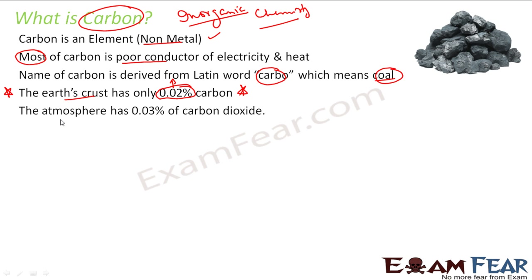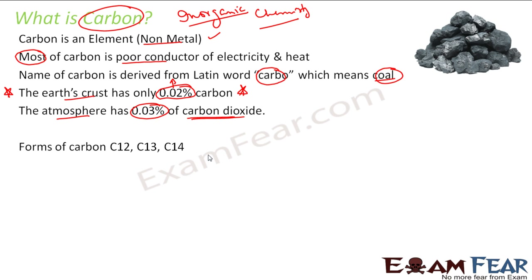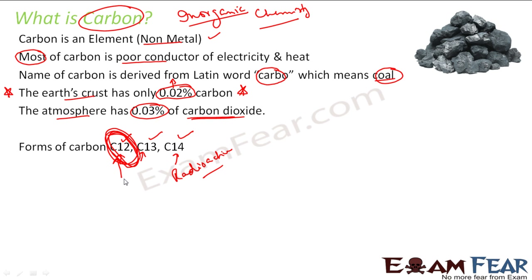If you talk about the atmosphere, it has only 0.03% of carbon dioxide, and yet we talk about global warming and carbon dioxide increase. Carbon has various forms: C12, C13, and C14 — these are various isotopes of carbon. C14 is radioactive, but we will be focusing more on C12, which is normal carbon.